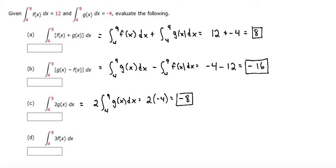For part d, similarly, we can bring the 3 to the front. 3 times the integral from 4 to 9 of f of x dx, and the integral from 4 to 9 of f of x dx is 12, so this is 3 times 12, which is equal to 36. And that's it.